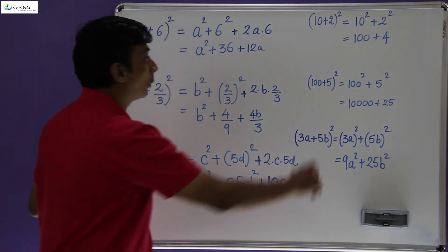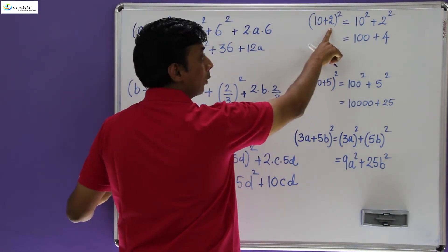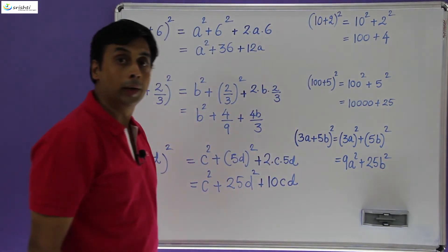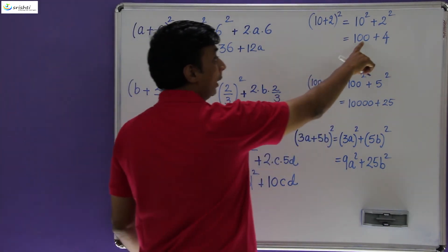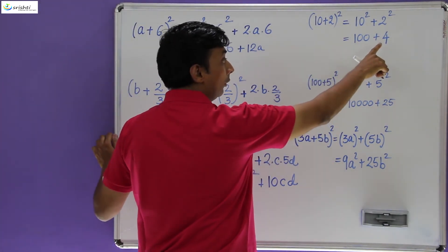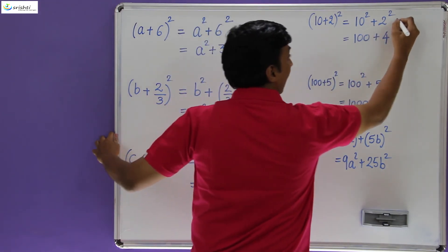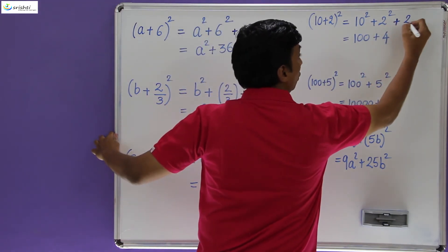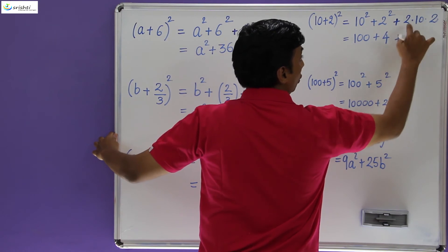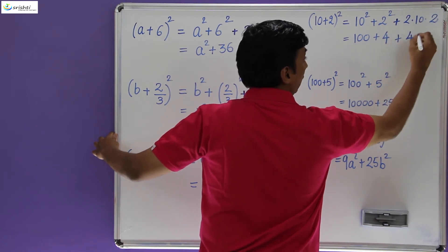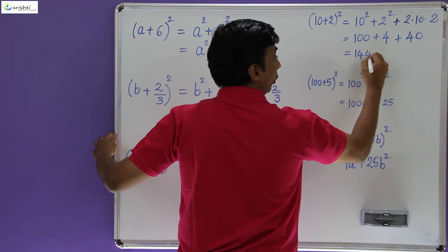In the fourth problem, (10 + 2)² — 10 + 2 = 12, and 12² = 144. According to the misconception, we wrote 100 + 4 = 104. We need to add the 2ab term: 2 × 10 × 2 = 40. So 104 + 40 = 144, which is absolutely accurate.